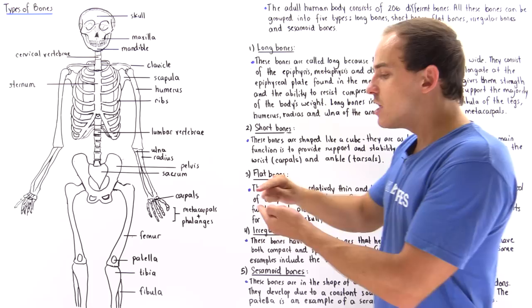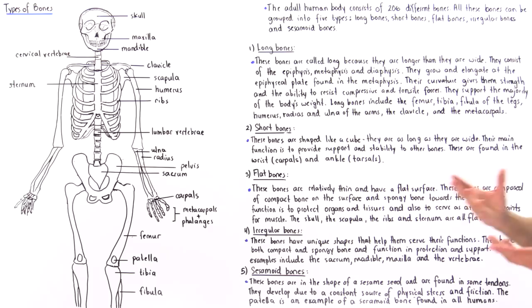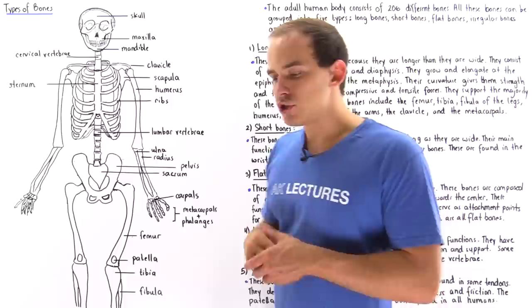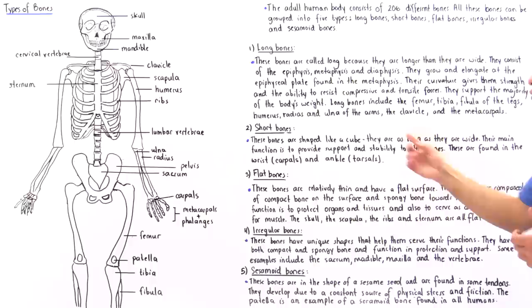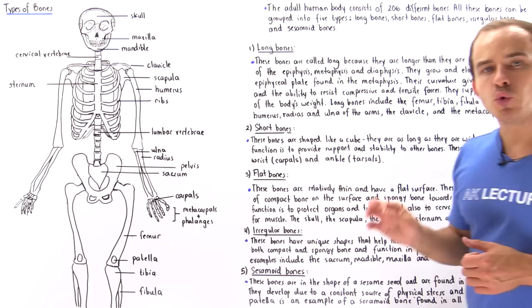The second type of bone is the short bone. By definition, a short bone has the shape of a cube, meaning they are as long as they are wide. Short bones function by providing support and stability to other bones, and they do not actually move themselves.